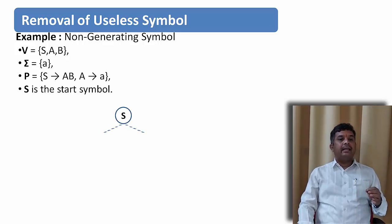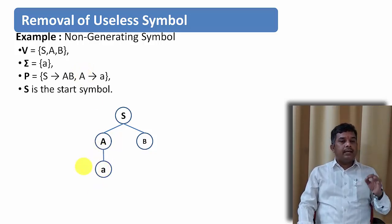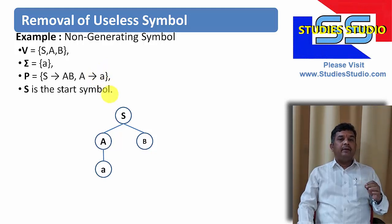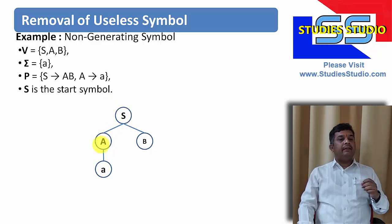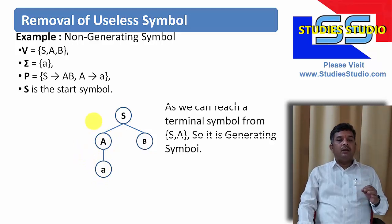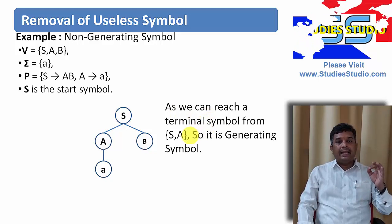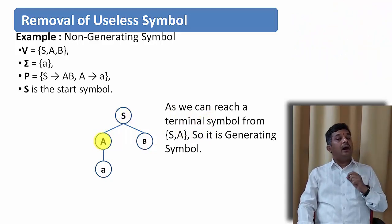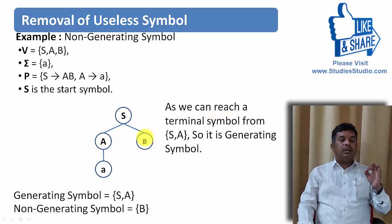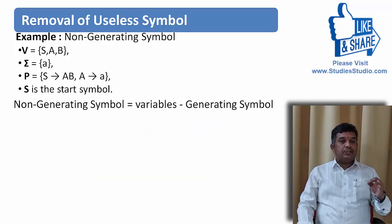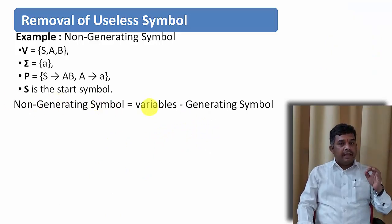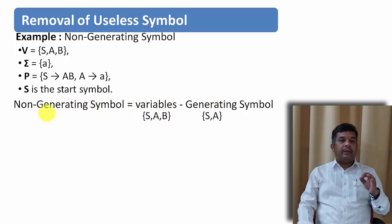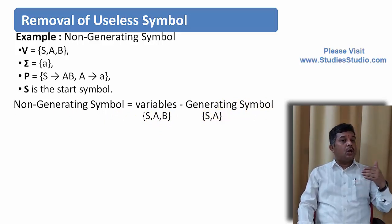From S, I can derive A or B. From A, I can generate 'a'. So, the only terminal symbol 'a' is generated via this particular route — from S I can derive A, and from A I can derive the terminal 'a'. This means we can reach the terminal symbol 'a' from the variables S and A. So, S and A are my generating symbols. B is the only symbol which is non-generating.